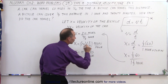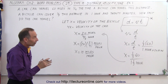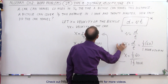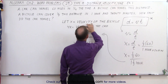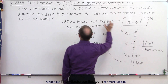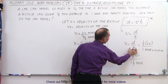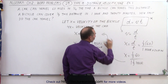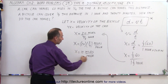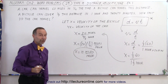By using the equation distance equals velocity times time, solving for velocity, and replacing velocity with x — representing the bicycle's velocity — we take the distance of one third of 60 miles, which is 20 miles, and the time of one hour and 20 minutes, which is four thirds of an hour. This gives a velocity for the bicycle of 15 miles per hour.